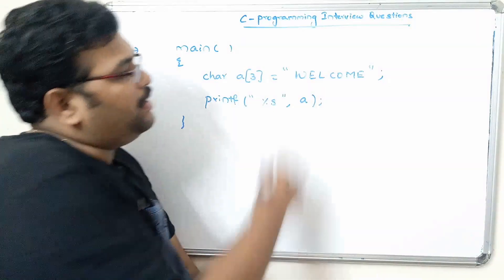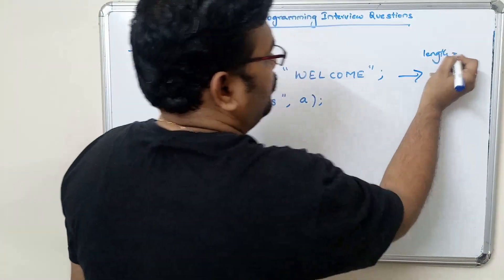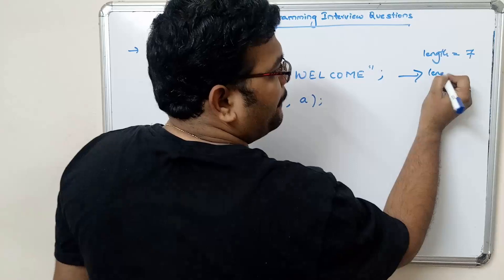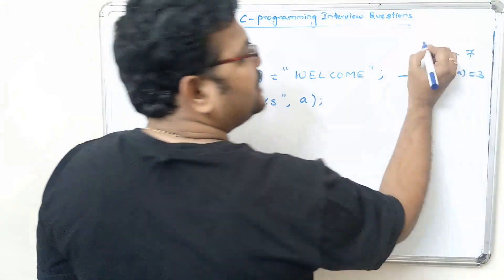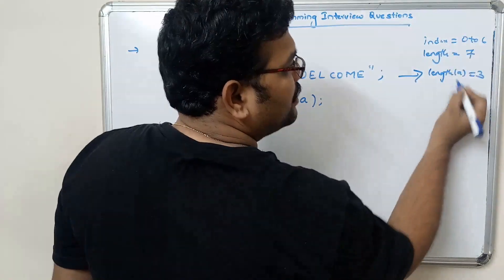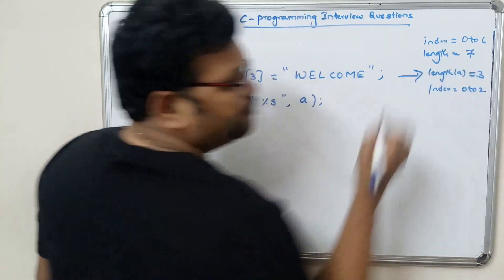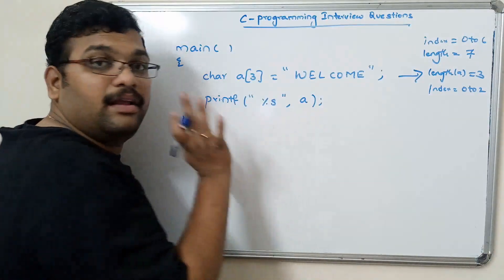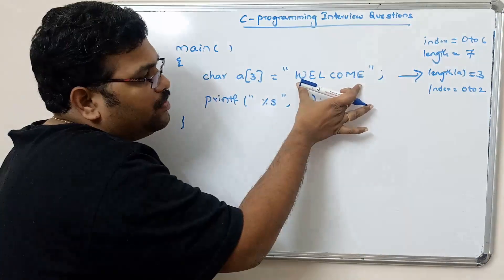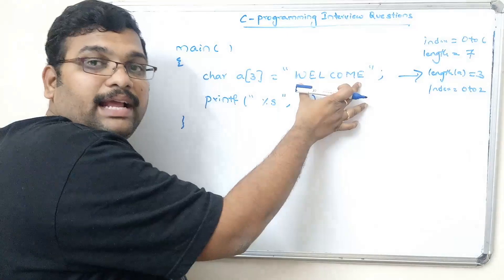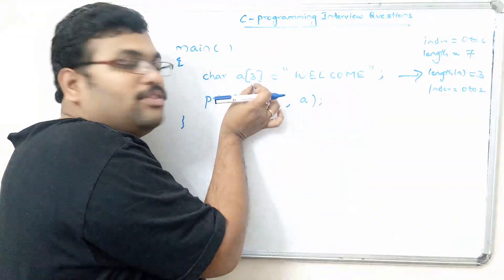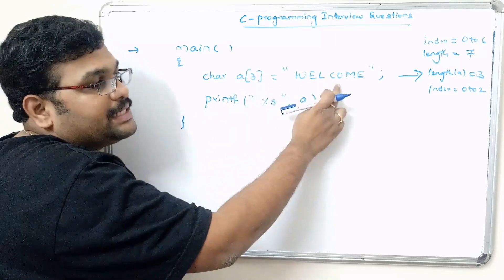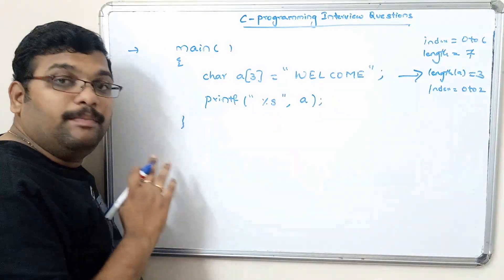We are assigning the text 'welcome'. The length of this text is 1, 2, 3, 4, 5, 6, 7 — so 7 characters, with index values from 0 to 6. But the declared size of the array is 3, meaning index values are from 0 to 2. Now we are printing this string directly. The length of the string we are assigning is greater than the length of the array we declared — only 3 bytes, but we are assigning 7 characters. There will be no compiler error.